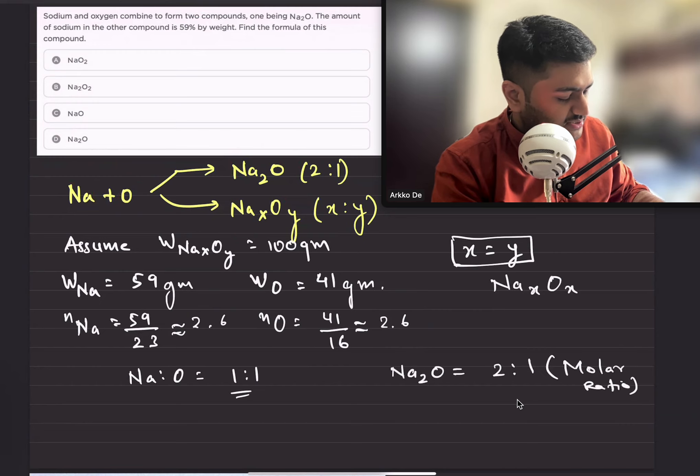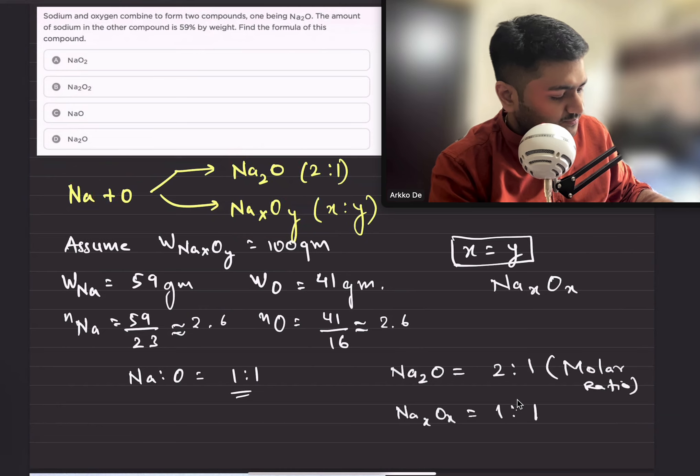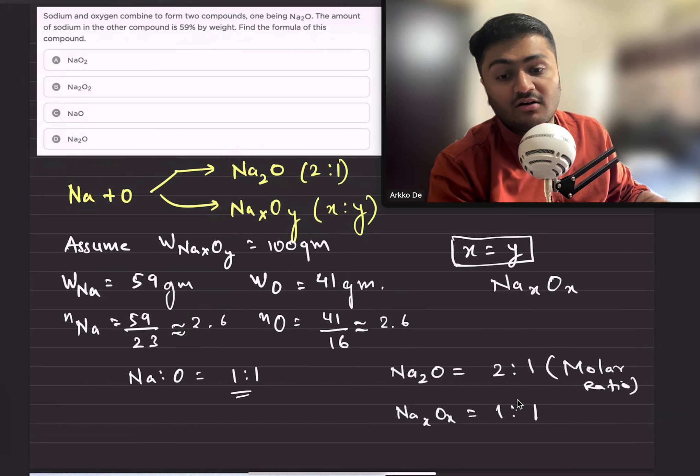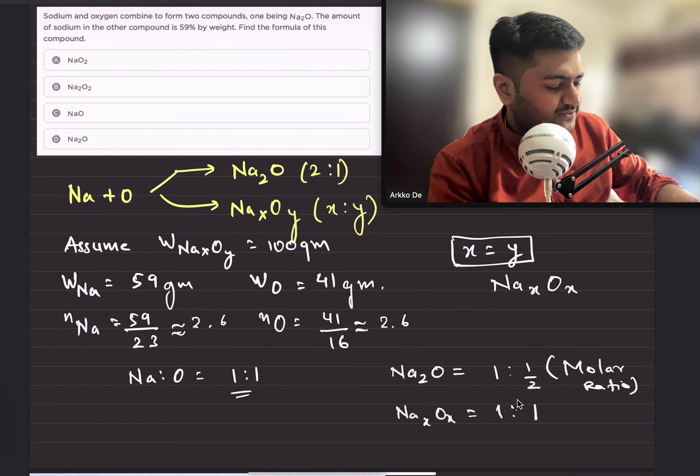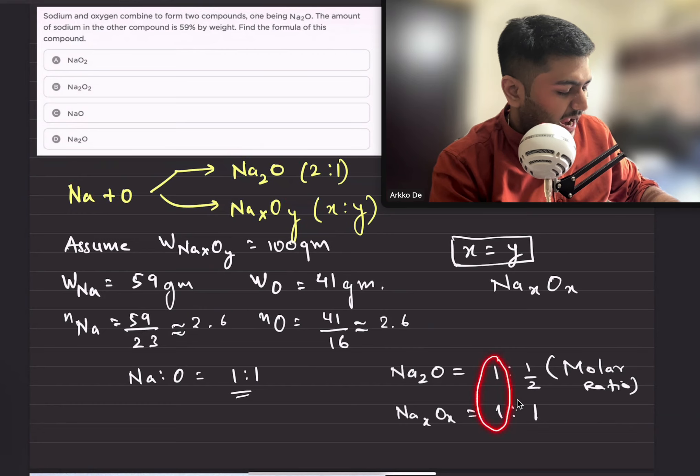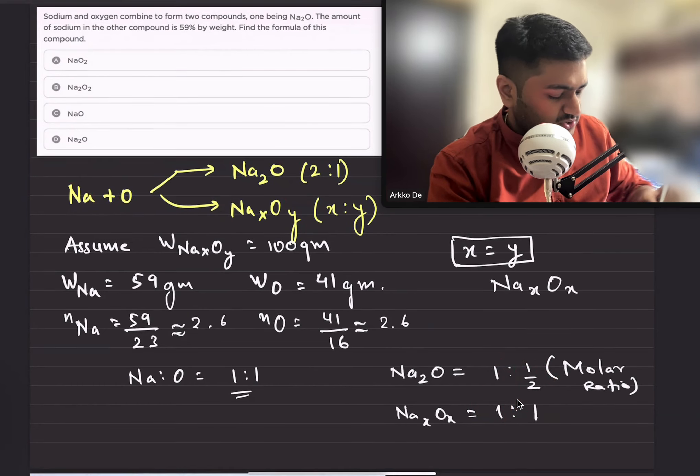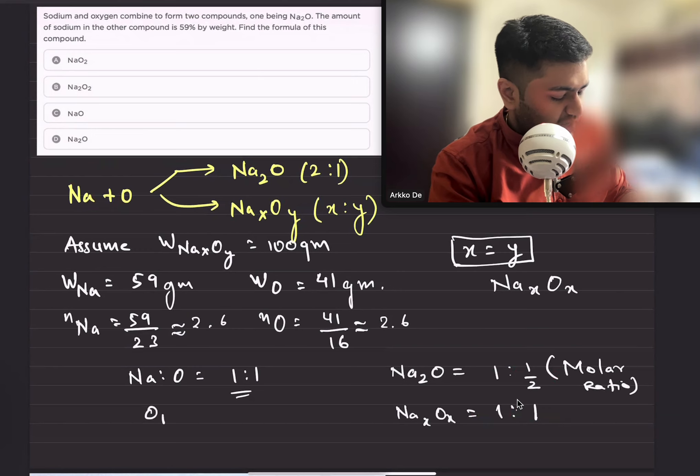If I make the moles of sodium constant and convert this to 1:1/2, then with moles of sodium constant, oxygen must vary in the ratio. So oxygen one and oxygen two are in the ratio 1/2:1, which is 1:2.